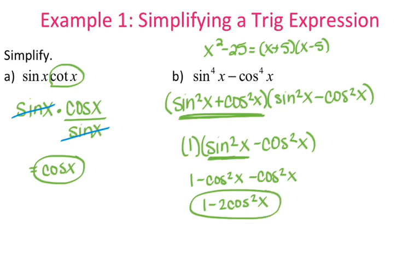And then you're done, because we got it down to a single trig function. Now, when you're doing your homework assignment, if you read the directions, it does say there are more than one correct answer. So there are several answers you can get — it depends on how you approach it. For example with letter B, if you were to stop at sine squared x minus cosine squared x, that would also be an answer.